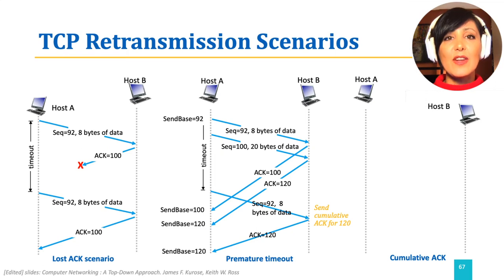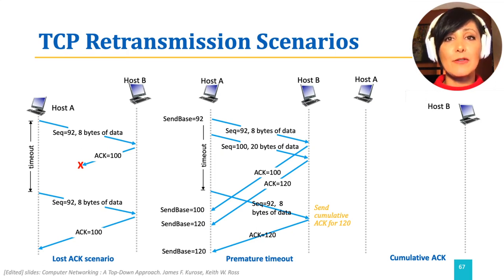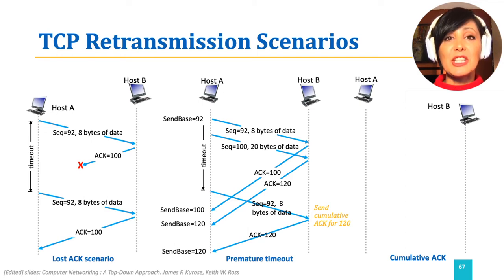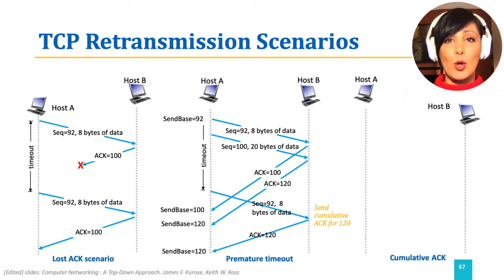At the receiver, because host B has already received all bytes up to 120, it will ACK 120, and that would be the cumulative ACK to host A.